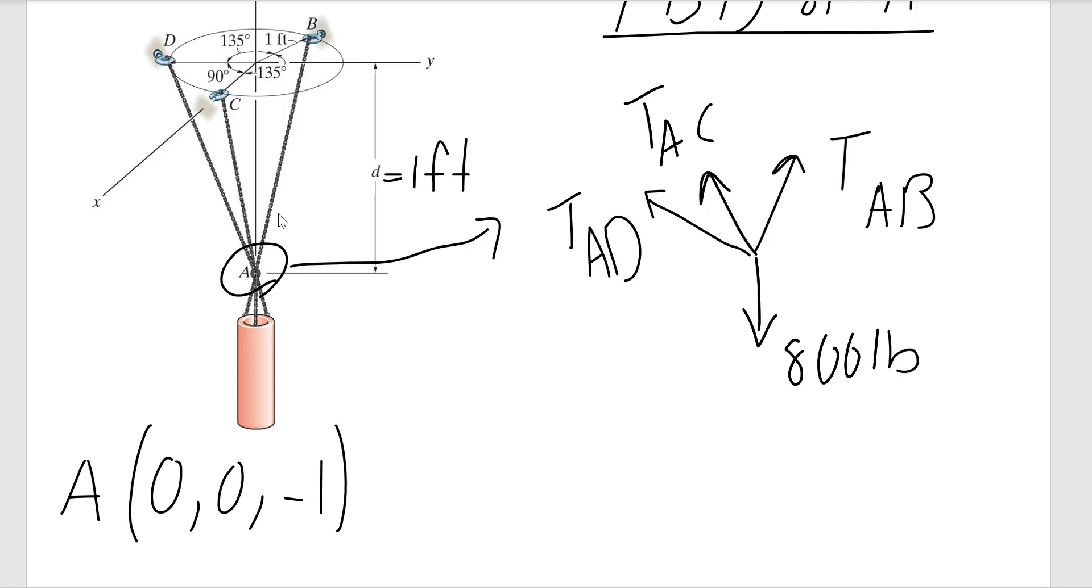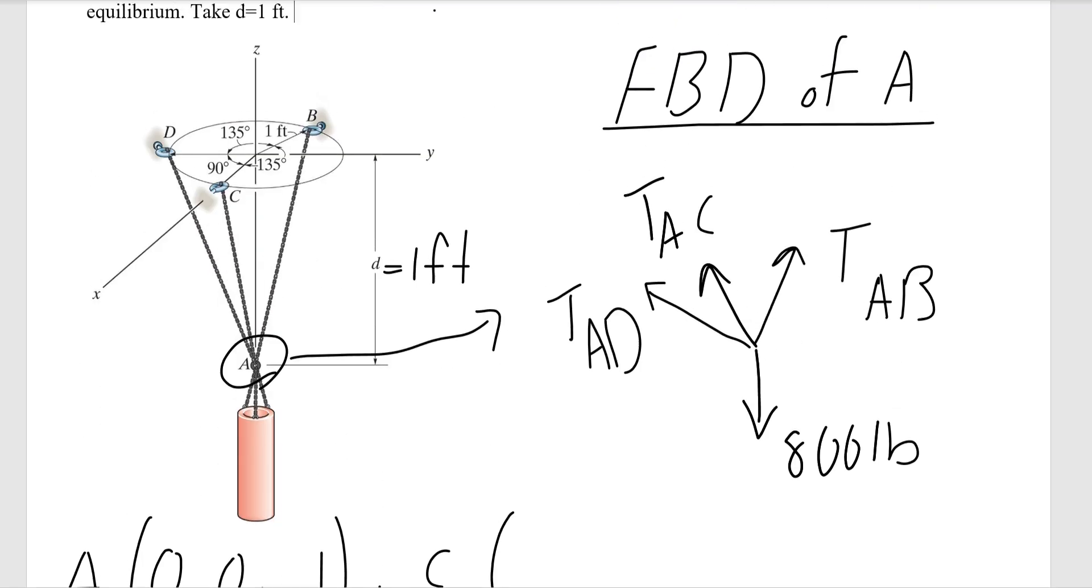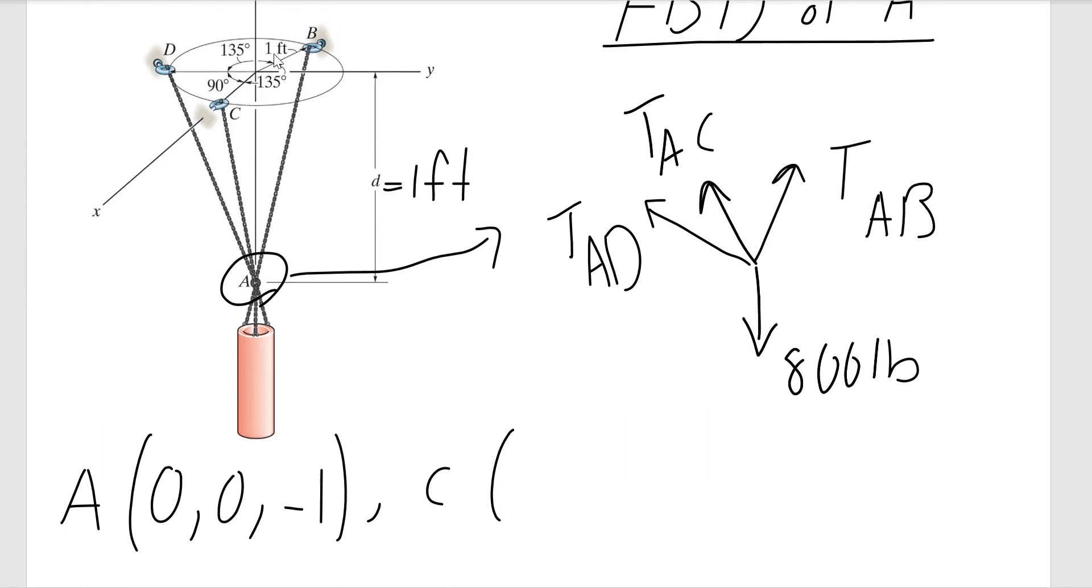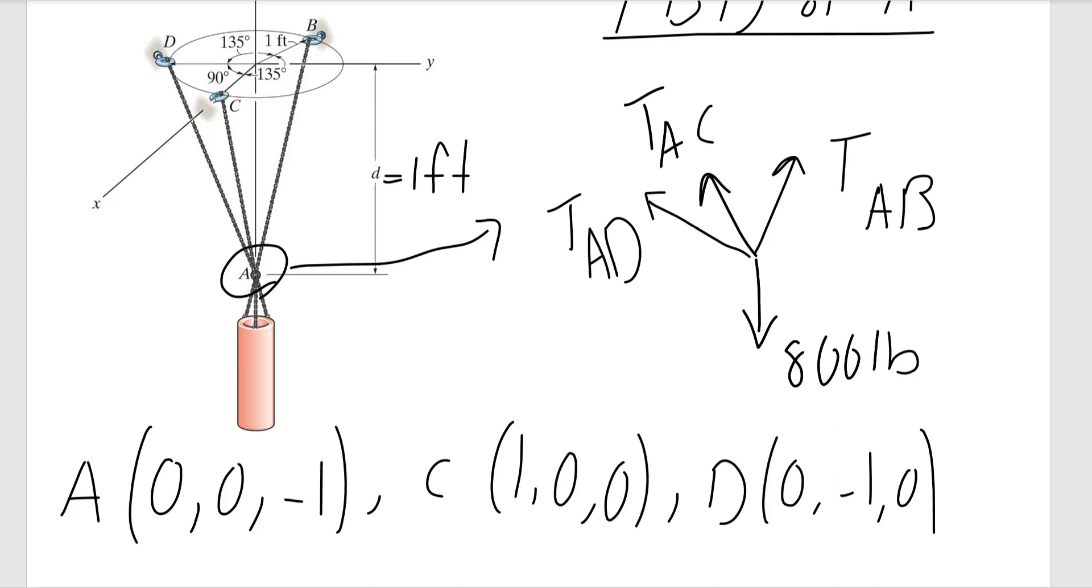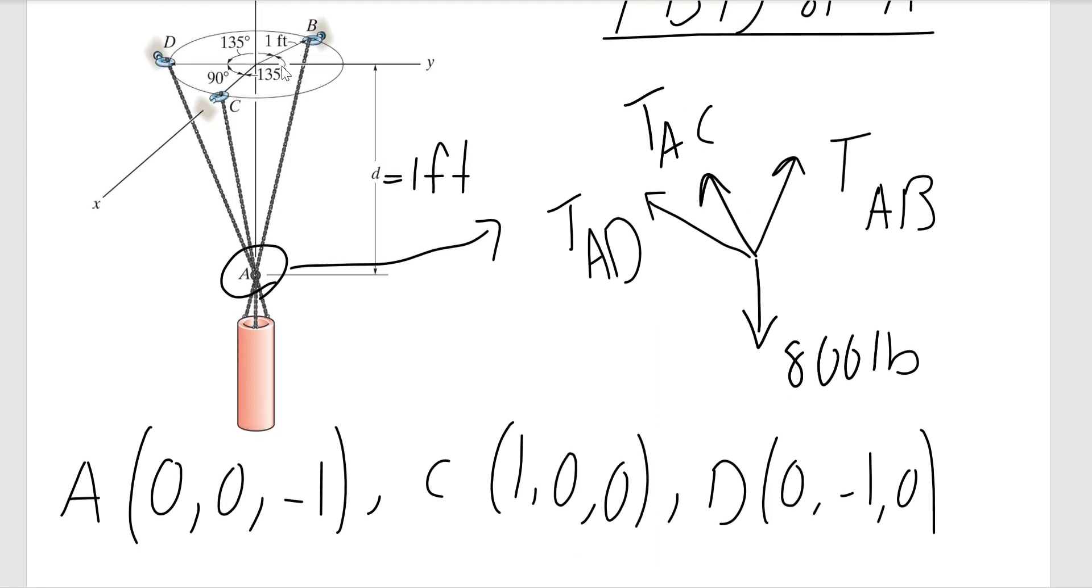Then we have point C which is on the X axis, so Y and Z would be 0, and X is 1, giving us (1,0,0). Point D is on the negative Y axis, so X and Z would be 0, and the Y component would be negative 1, giving (0,-1,0). Now for point B: point B is on the XY plane.